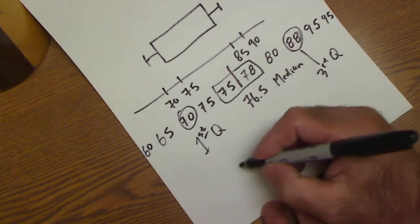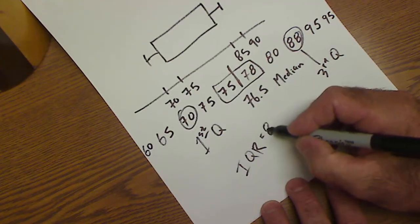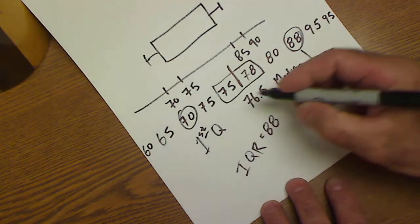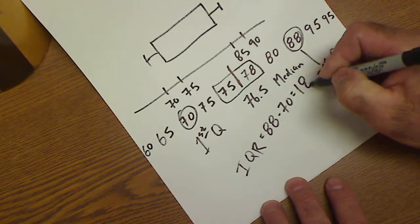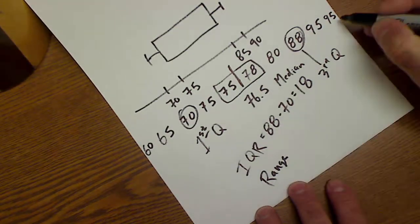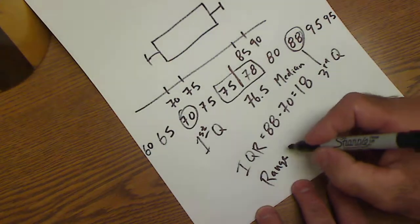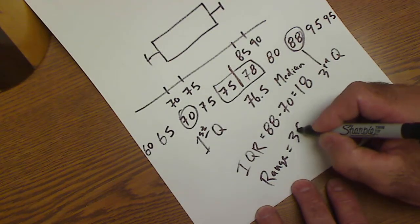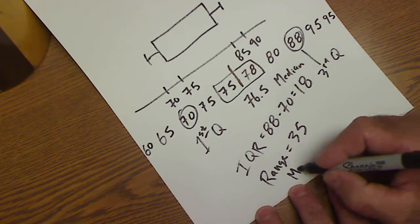My interquartile range is my third quartile, 88, minus my first quartile, 70. And I get an interquartile range of 18. My overall range would be the largest value, 95, minus the smallest value, 60. So my range is 35. My median, my middle value is 76.5.